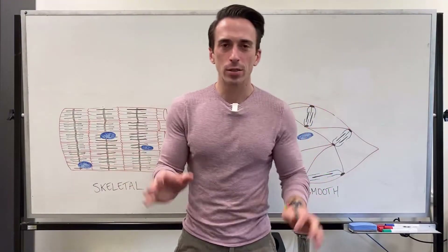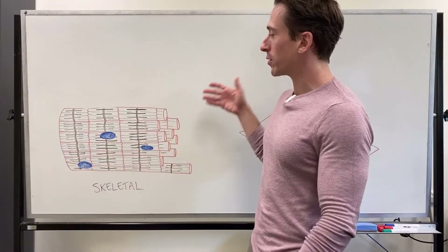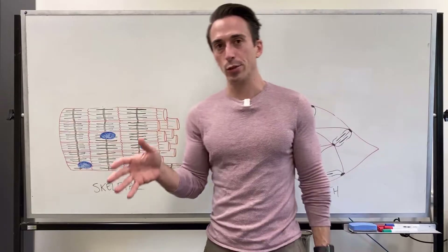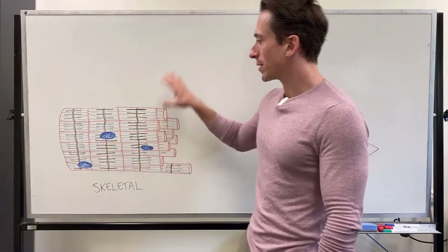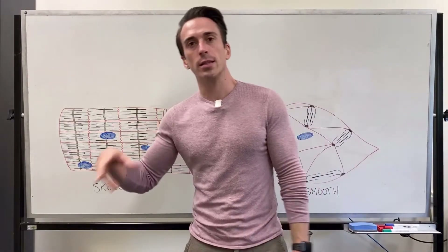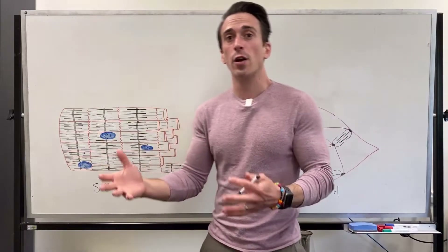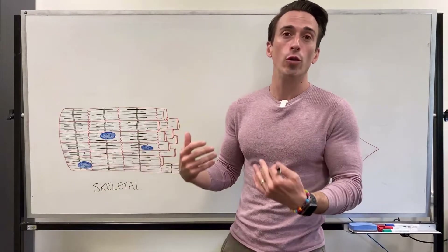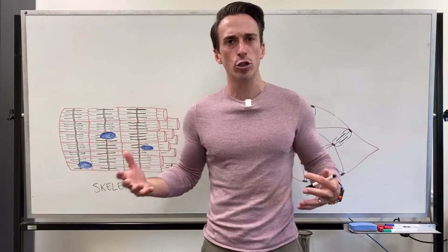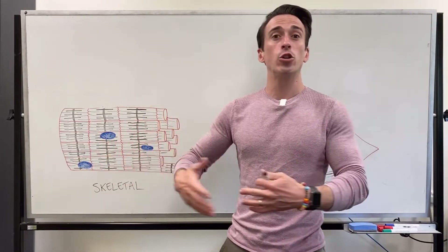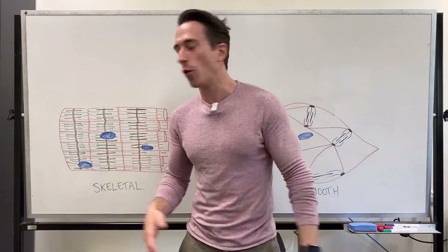The first thing we need to look at is skeletal muscle. Skeletal muscle is obviously muscle that's attached to our skeleton, and when it contracts it allows for our body to move. It's there predominantly for locomotion — for us to be able to do work and produce force.